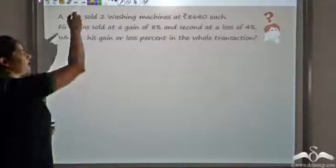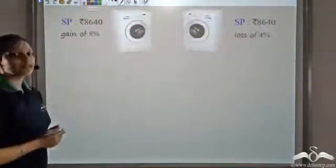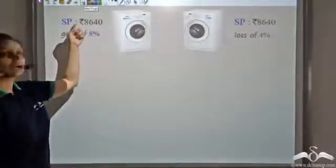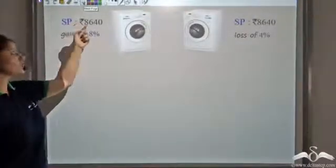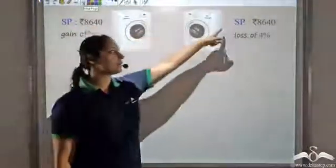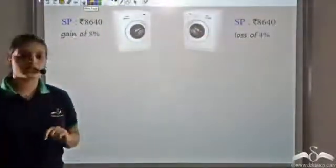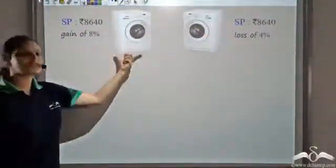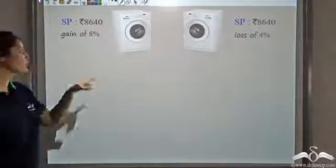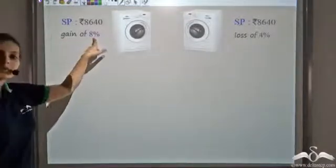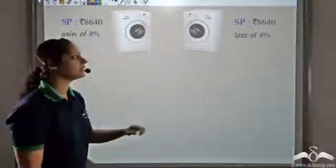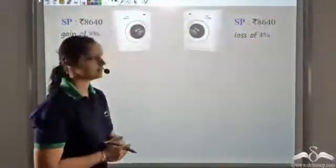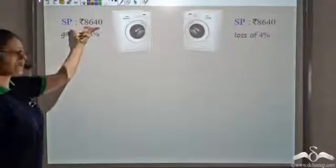Let us look at this. What we are given is that he sold 2 washing machines. We are given a selling price of each which is ₹8640. The first washing machine was sold for a gain of 8 percent, that is the profit is 8 percent. On the second one there is a loss of 4 percent. So we know the selling price.